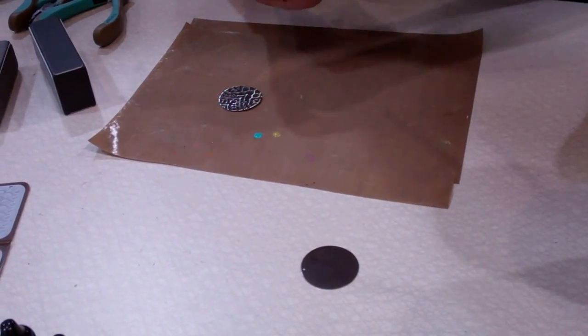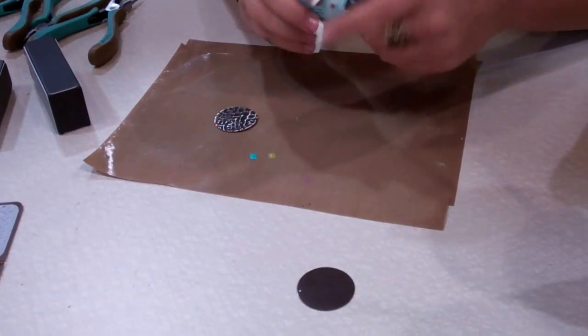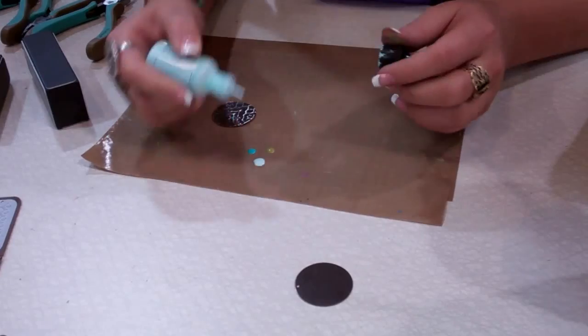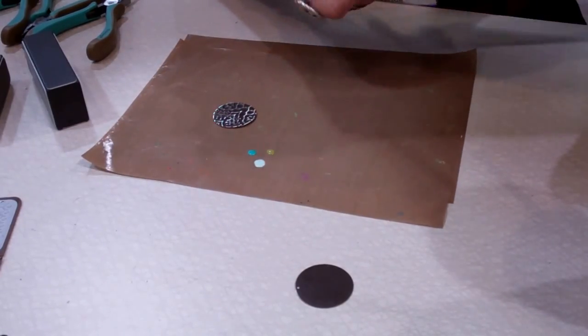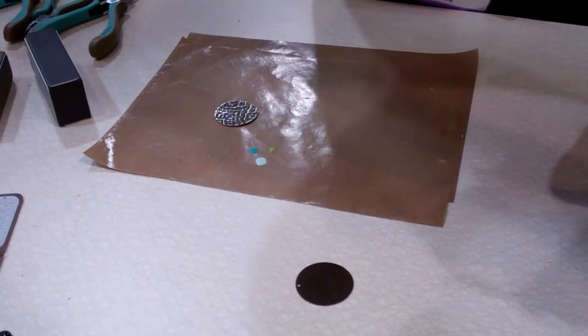The cool thing about these patinas is that they're super fast drying—they'll be completely dry in about two minutes. They're water-soluble, so when using my paintbrush, I want to make sure it's almost completely dry.